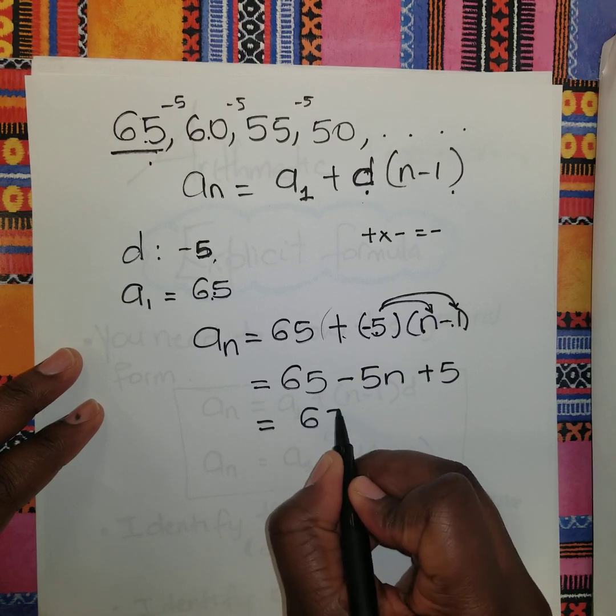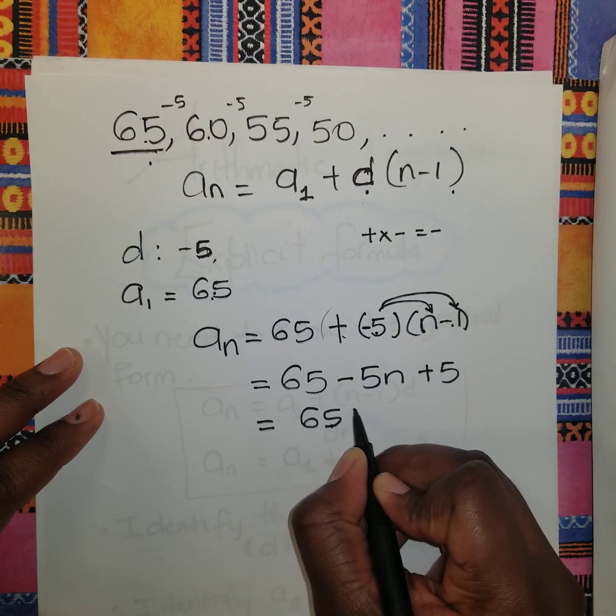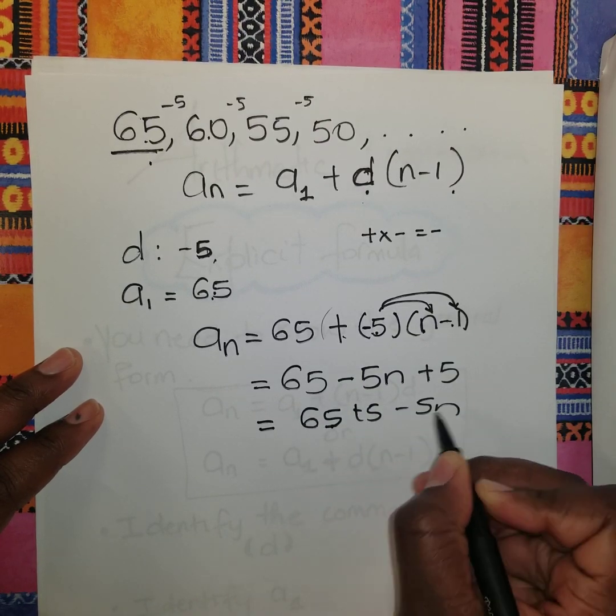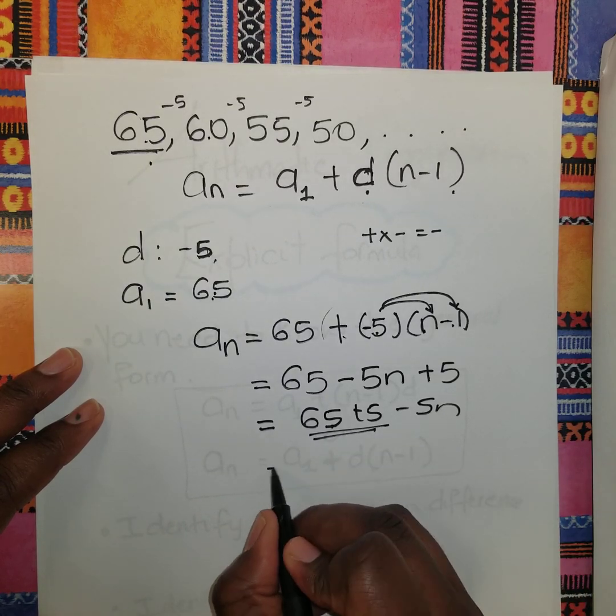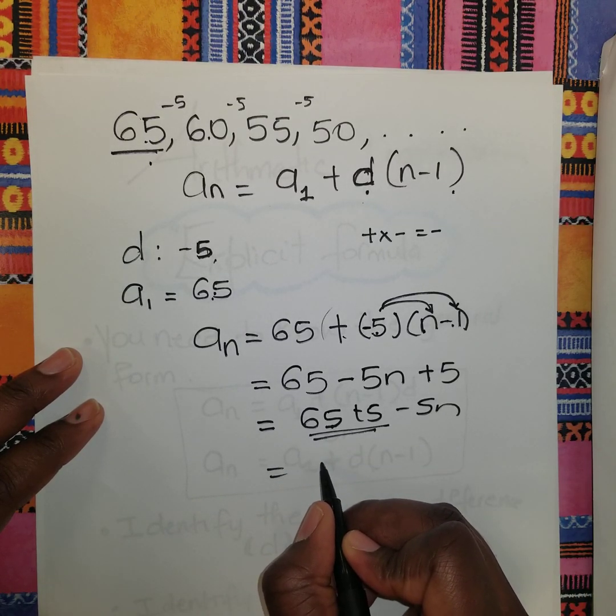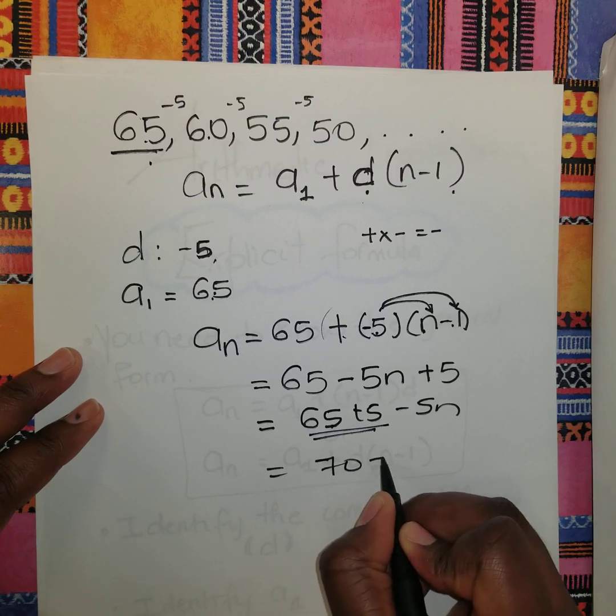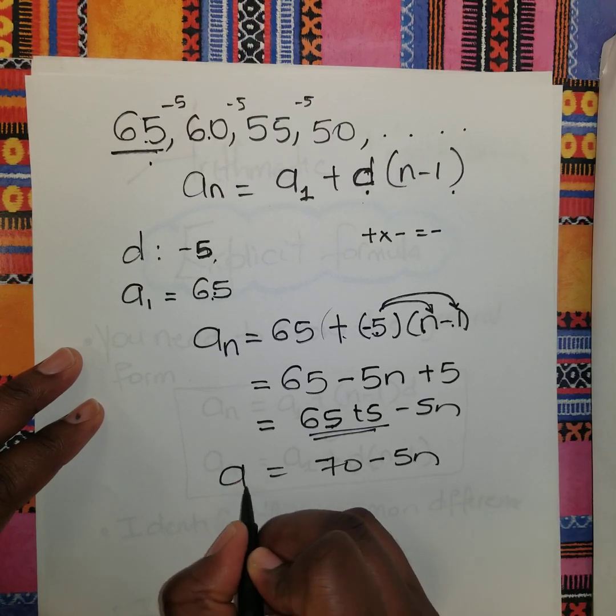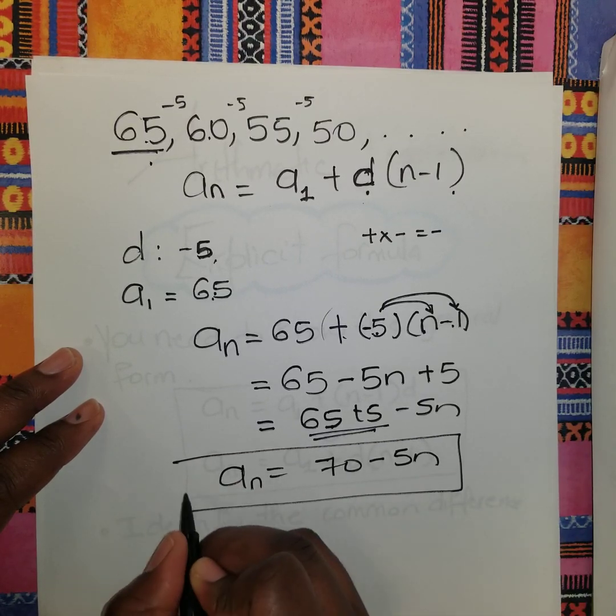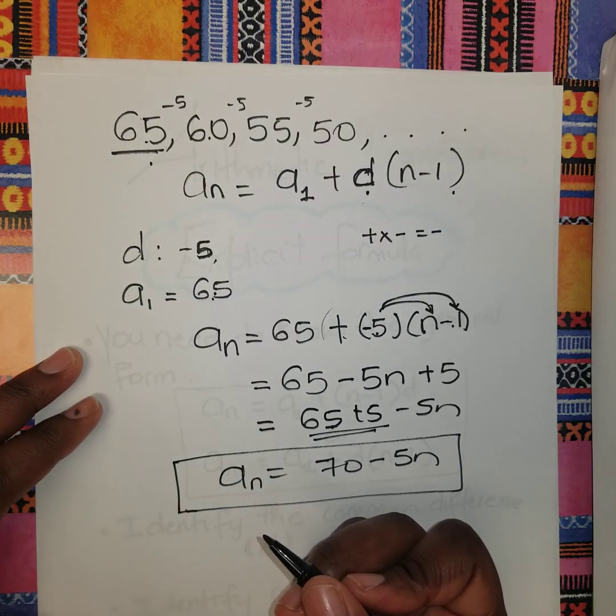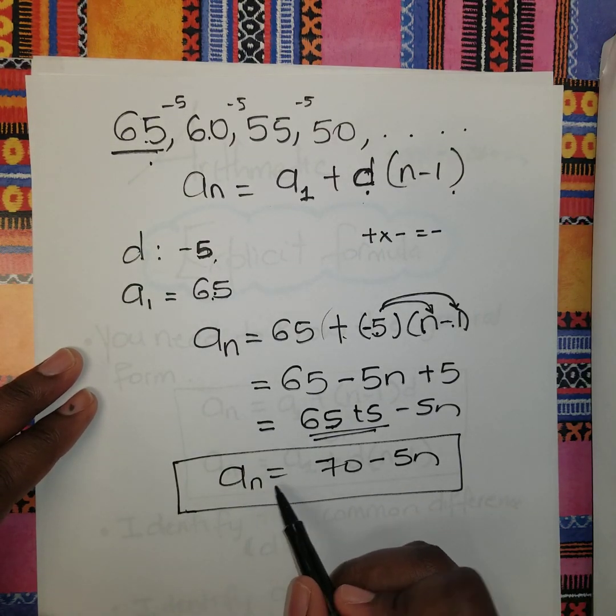So we have 65 - 5n + 5. Grouping like terms: a_n = 70 - 5n. This is our explicit formula, the equation for the nth term. This means any number we put in here will give us the corresponding term.